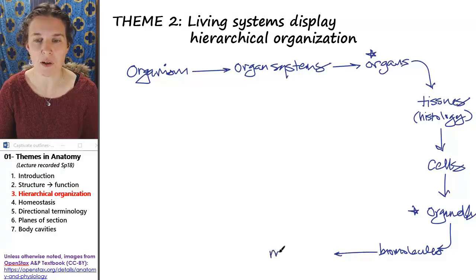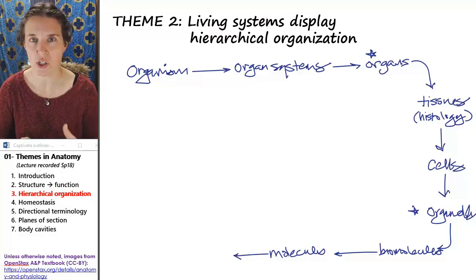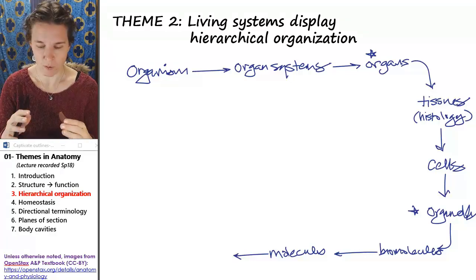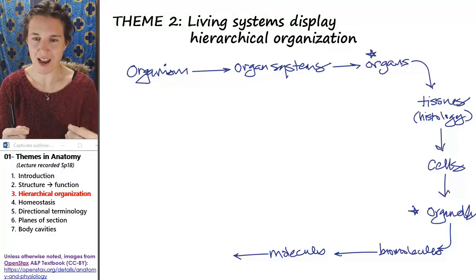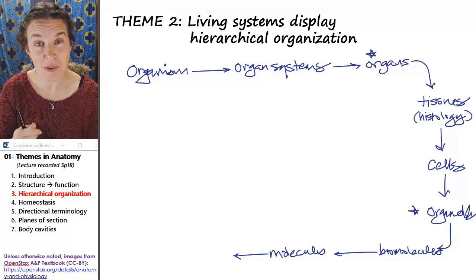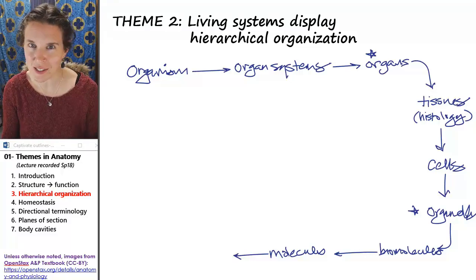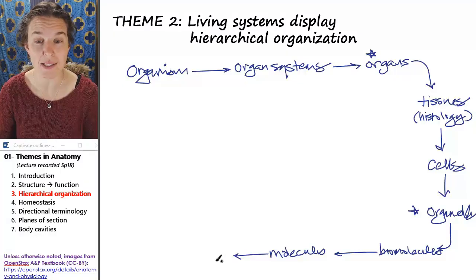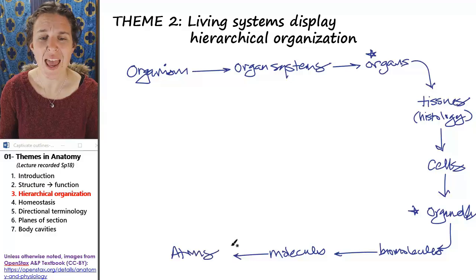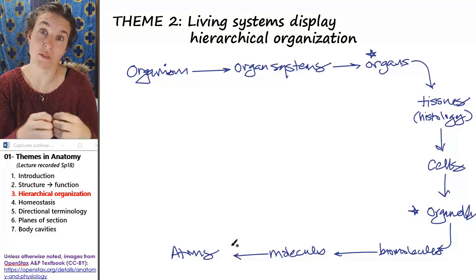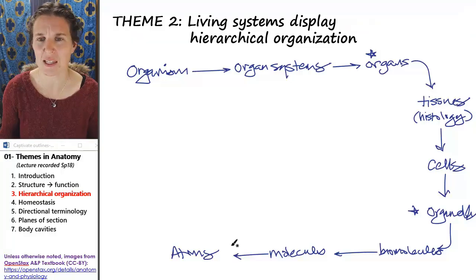Biomolecules are made up of just regular molecules — water, carbon dioxide, oxygen — biomolecules are just more complex. They are actually built of little units; for example, proteins are made of amino acids. The functional unit of a protein is an amino acid — those are the building blocks of biomolecules. Molecules are made up of atoms, and atoms are actually divisible — they're made up of subatomic particles — but for our purposes let's just keep it there.